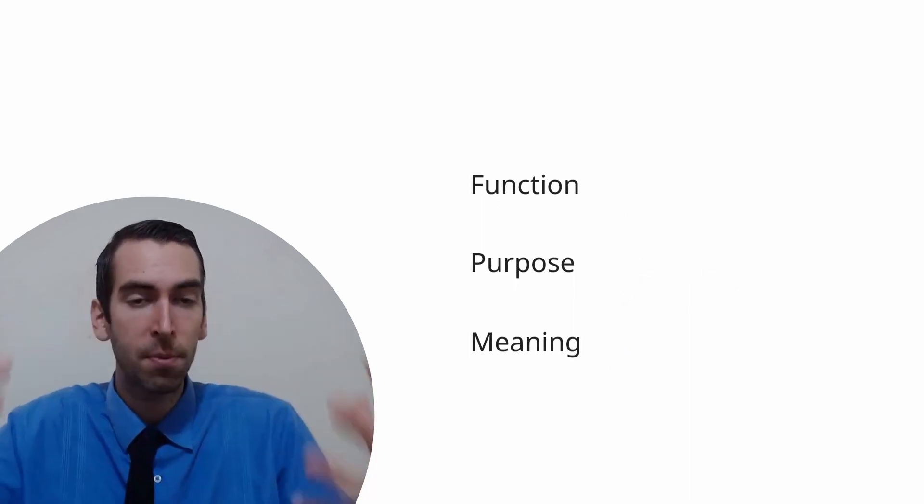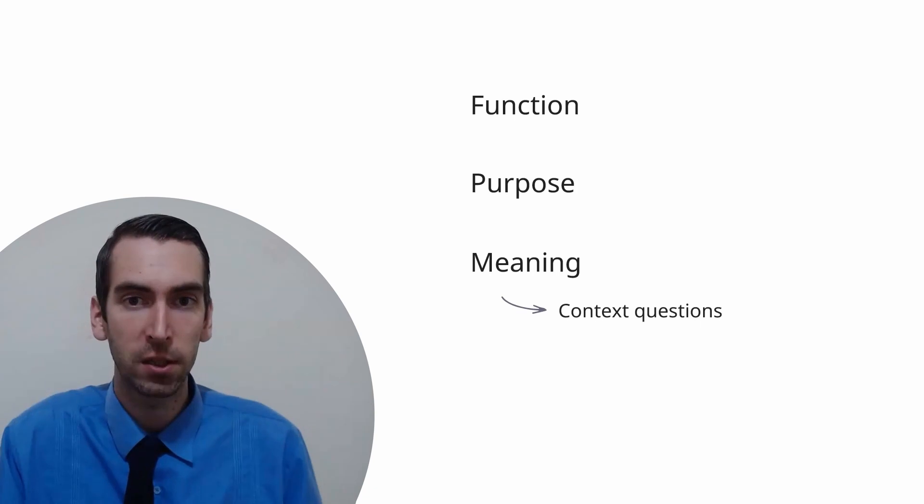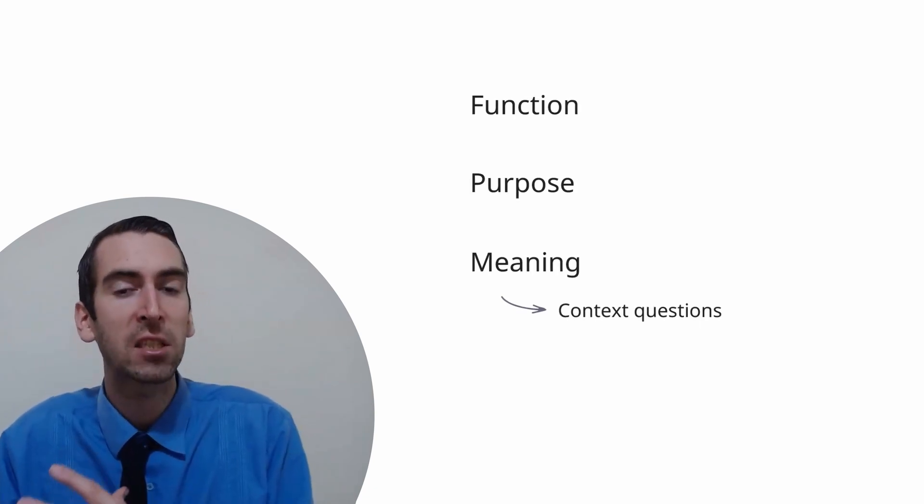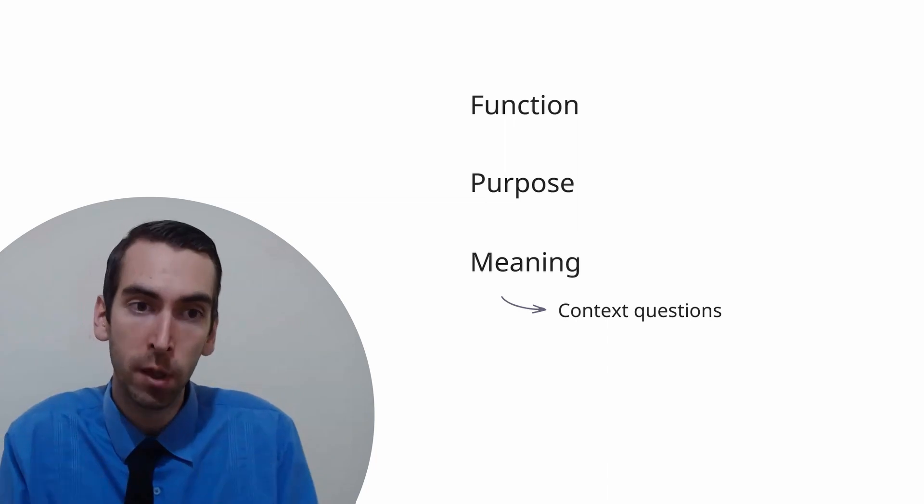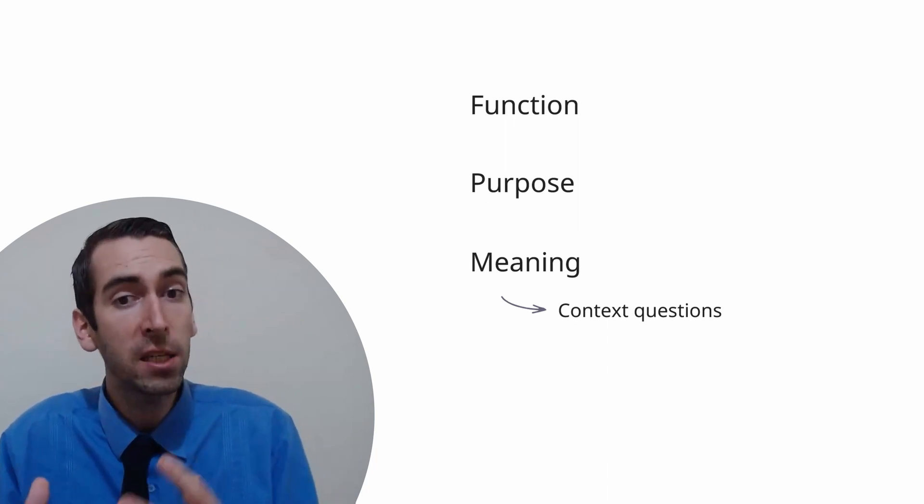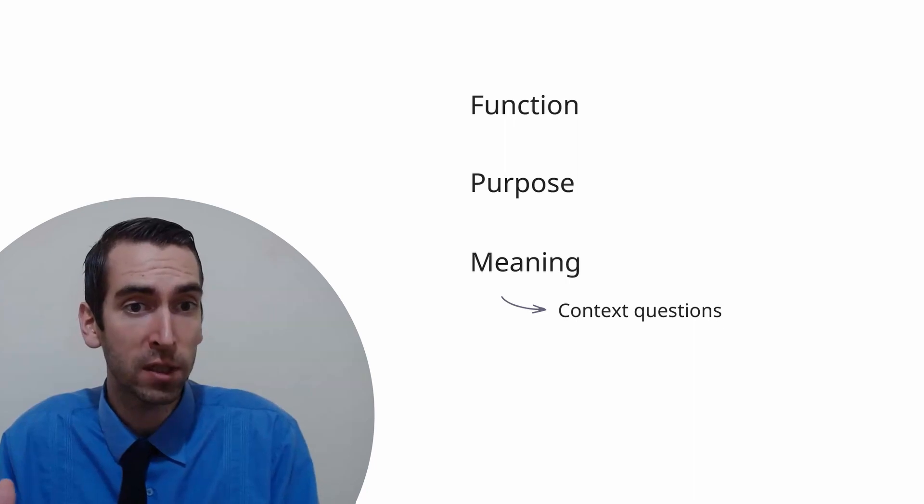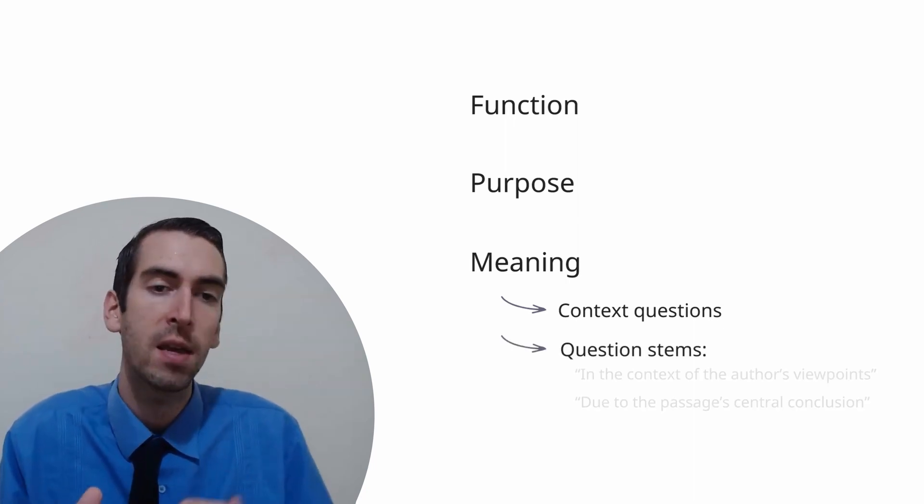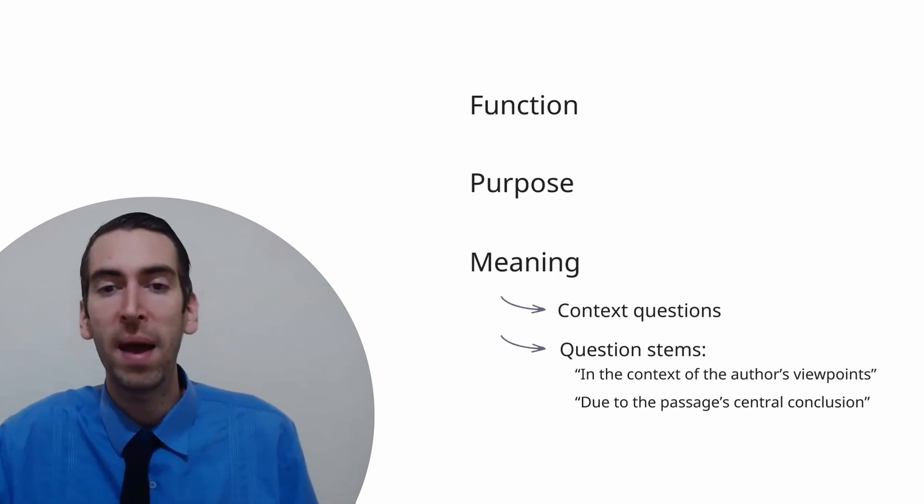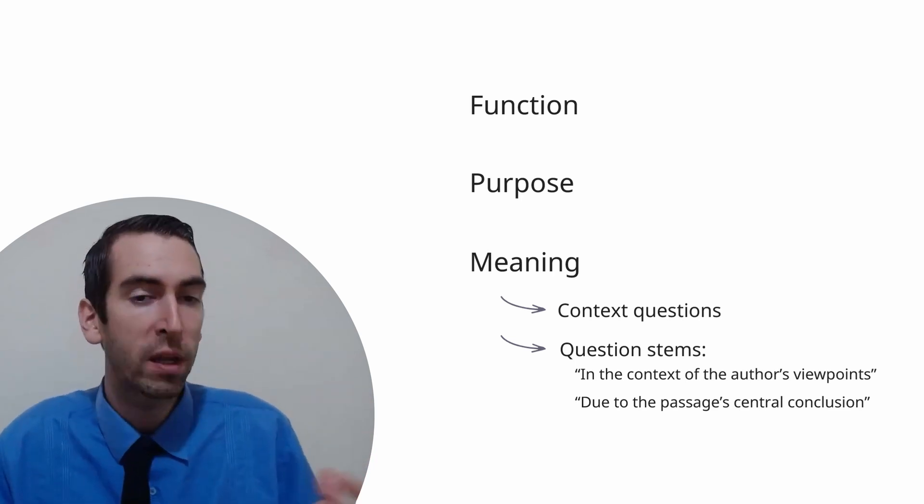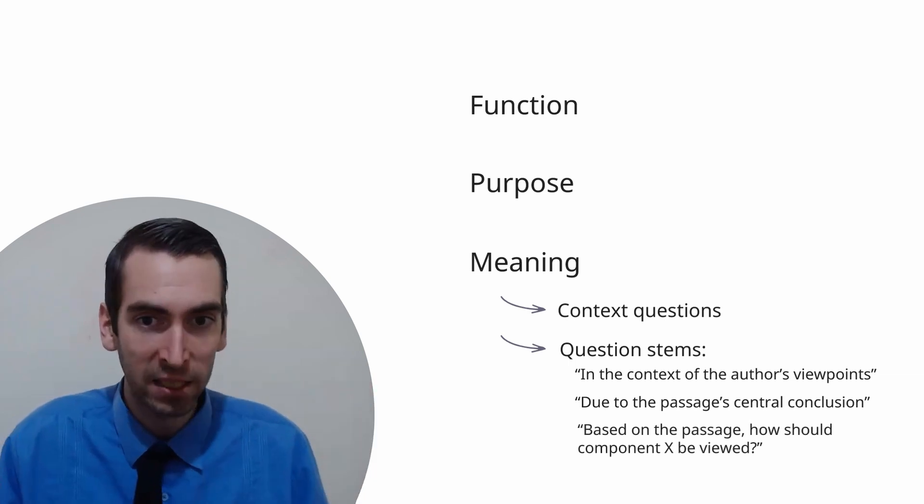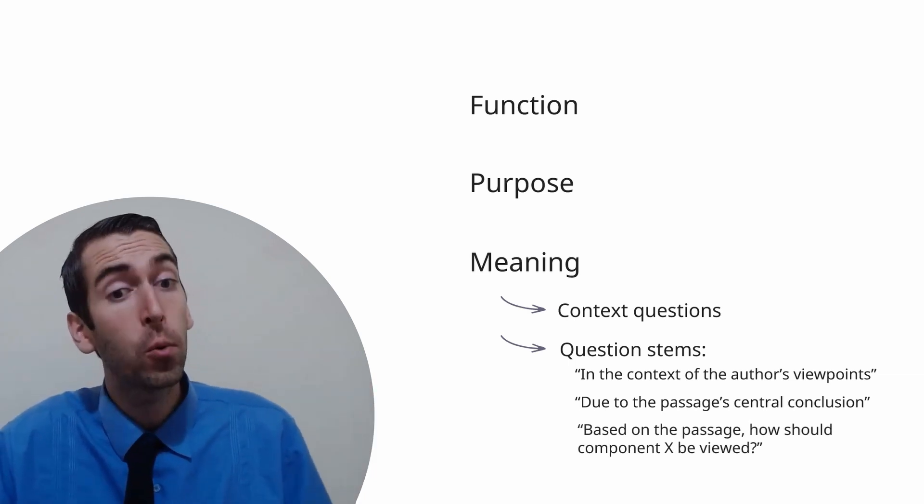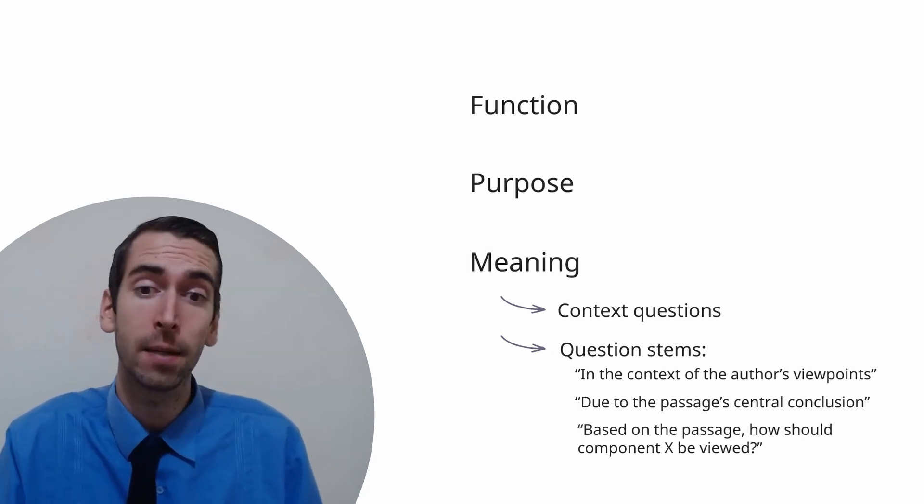Let's then call this type of question context questions. These are questions that branch off the main idea and ask you to infer the purpose for individual components of a text. You can be clued into the fact you'll be getting one of these question types when the question stem contains one of the following phrases: In the context of the author's viewpoints, due to the passage's central conclusion, or even simply based on the passage, how should component X be viewed? When answering these question types, always keep the main idea in mind.